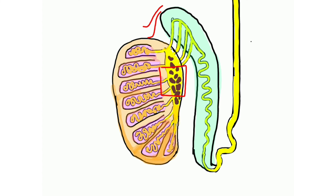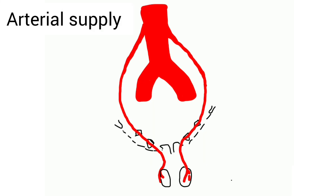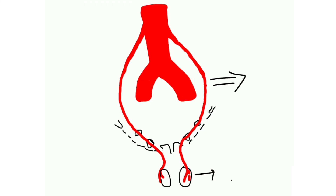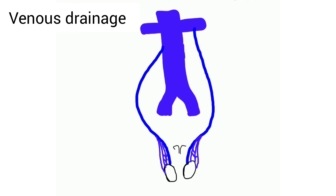Blood supply of the testes: it is supplied by the testicular artery, which is a direct branch from the abdominal aorta, arising at the L2 vertebral level. It passes through the inguinal canal to supply the testes. For venous drainage, it is by the pampiniform plexus, which within the inguinal canal condenses into the testicular vein.